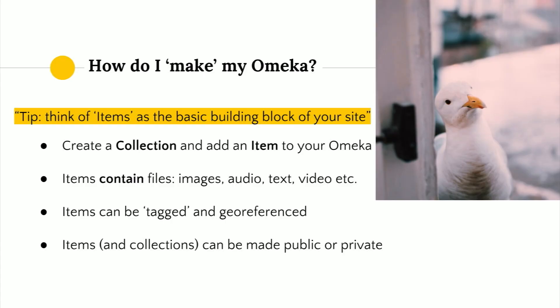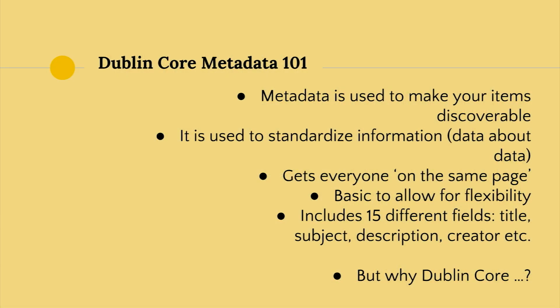How do I make my Omeka? A tip is to think of the items in your site as the basic building blocks, kind of like bricks in a house. First, create a collection and add an item to your site. An item can contain various files — images, audio, text, or even video. Items can then be tagged and geo-referenced, and items and collections in Omeka can be made public or private. As a first-time user, you might be wondering what on earth is metadata. Metadata is used to make your items discoverable. It's a system of language used to get humanities, arts, and social science researchers on the same page. It includes 15 different fields, including title, subject, description, and creator.